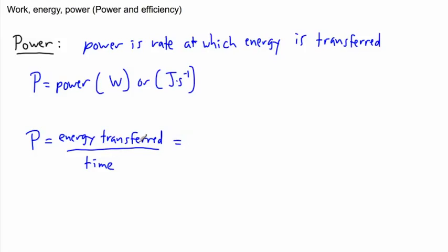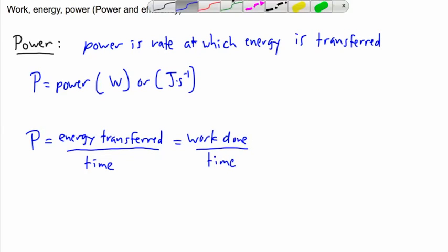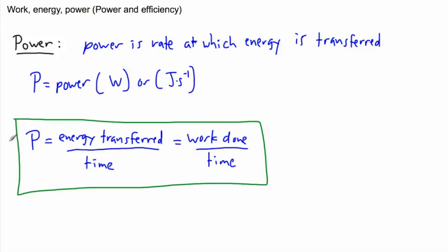But because of the work energy theorem, we can also say that it's the work done over time. It's the same thing. So this is the main equation right here. Keep in mind, power is a scalar. So it's just a number.